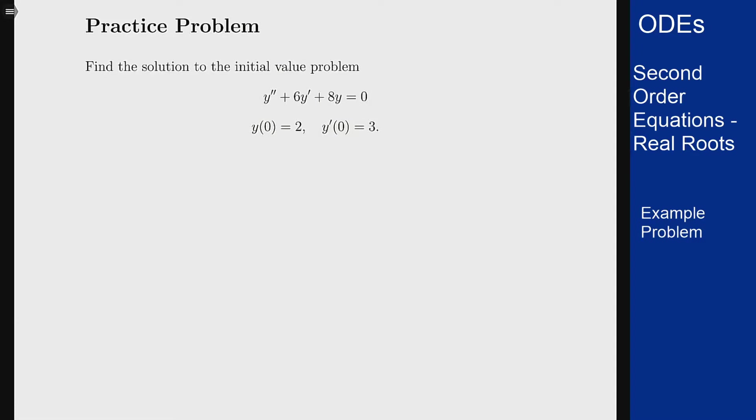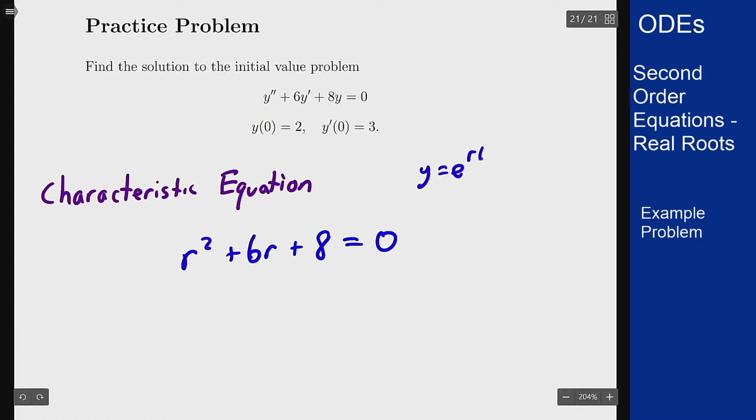To solve this we want to first start with the characteristic equation of this differential equation, which is r squared plus 6r plus 8 equals 0. This comes from guessing y equals e to the rt as a solution.